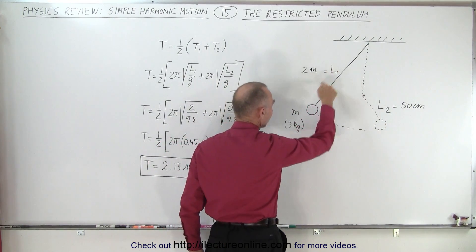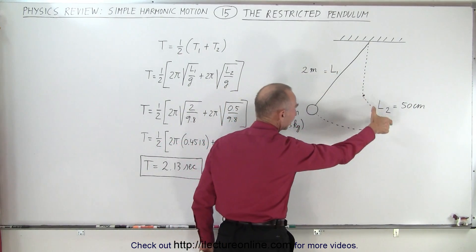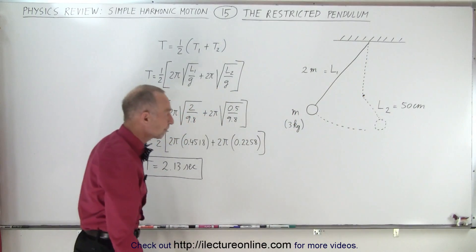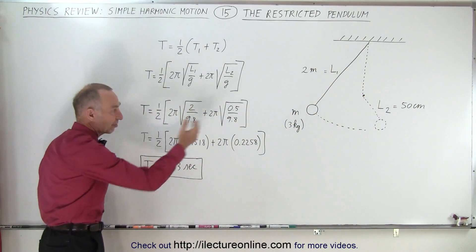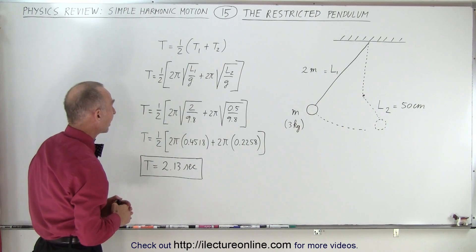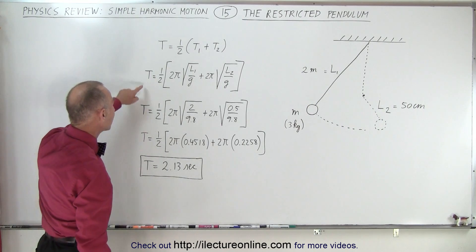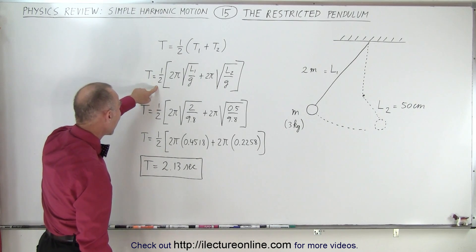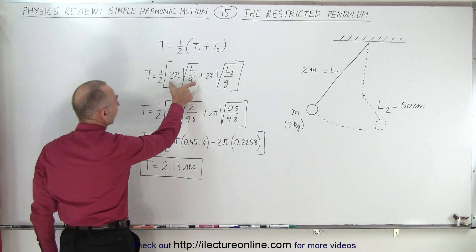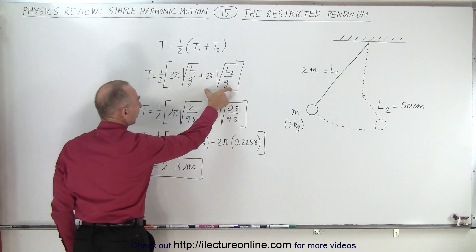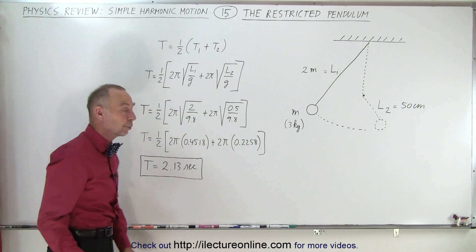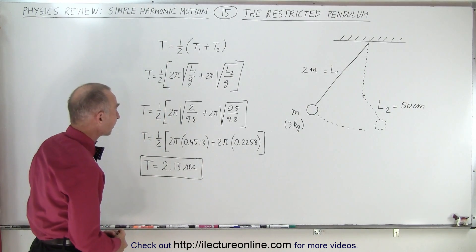Notice that on the left side the length is two meters; on the right side the effective length is only a half a meter. The math is shown, but the key point is that the period of oscillation is one-half times the period on the left side plus the period on the right side, and we simply apply our common equation for the period.